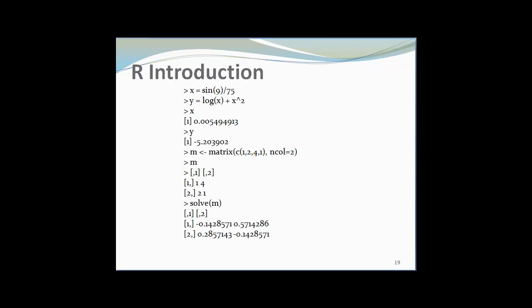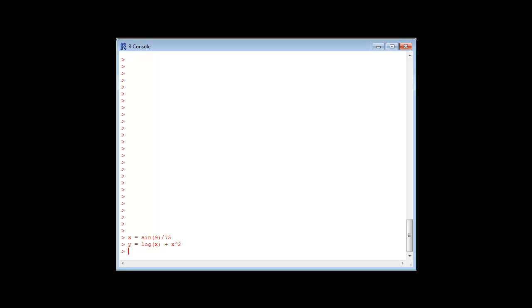Let's see how to use R language for some basic programs. I have used a function, object X equal to sin of 9 by 75 and object Y equal to log of X plus X square. To get the output I will type simply X and enter. For Y I will type Y and enter. In this way you can use the R software for simple calculations.